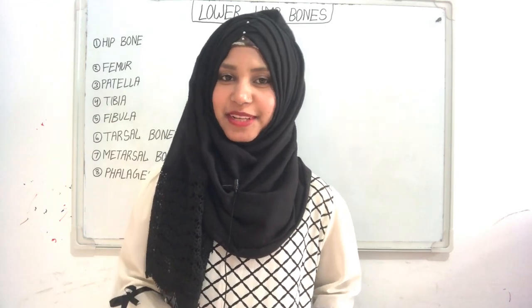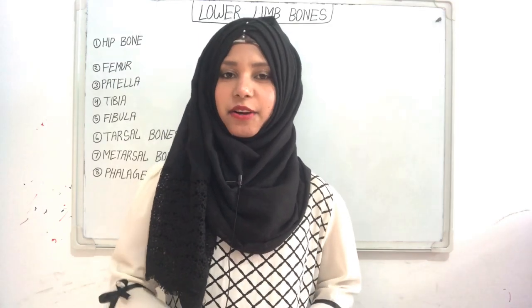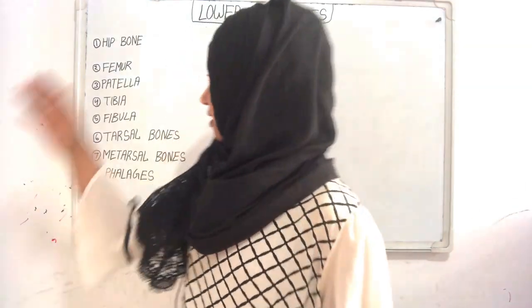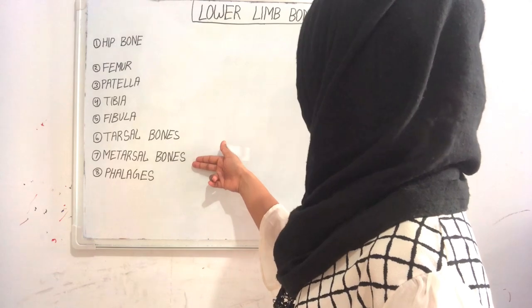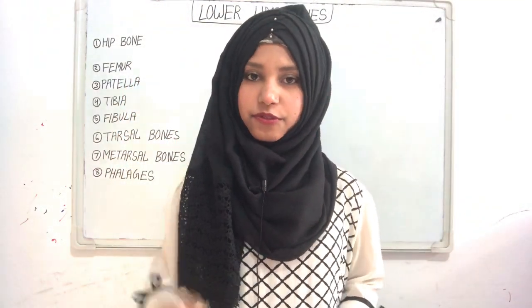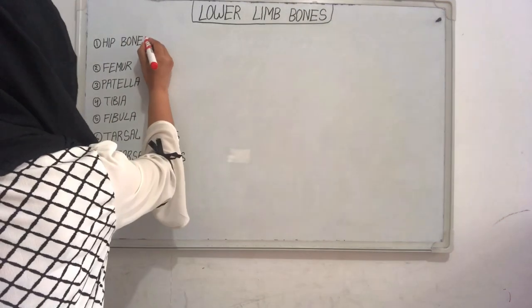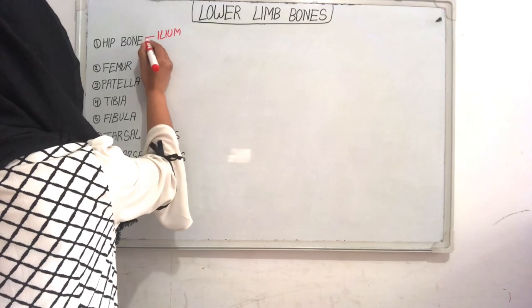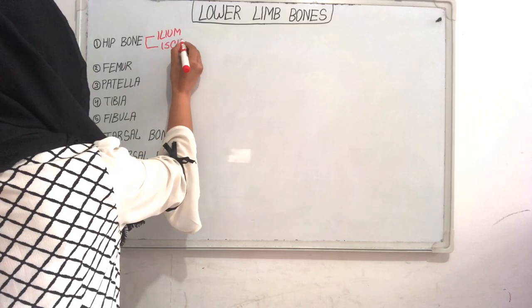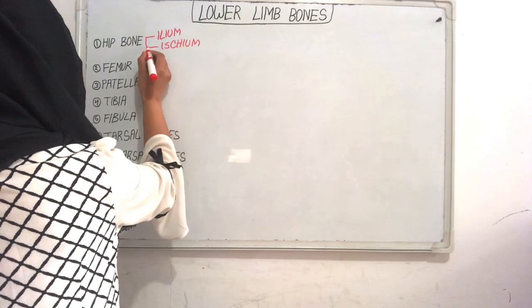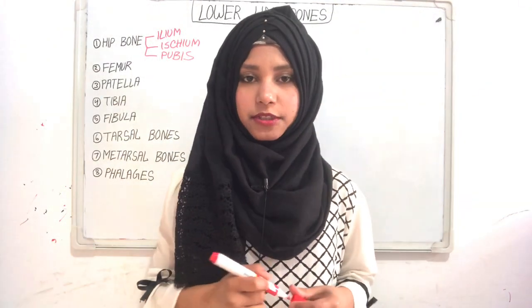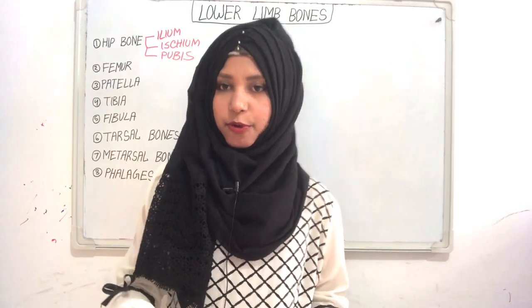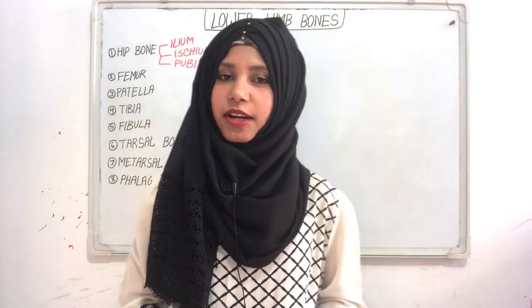Hello everyone, assalamu alaikum, welcome back to my channel. Today we are going to learn our lower limb bones. Our lower limb is made by these bones: hip bone, femur, patella, tibia, fibula, tarsal bones, metatarsal bones, and phalanges. Our hip bone is made up of three parts: ilium, ischium, and pubis. For our upper limb we use the term carpal and metacarpal, but for our lower limb we use tarsal and metatarsal. Now I will show you how to make a lower limb diagram.